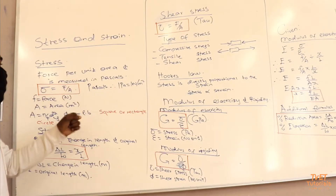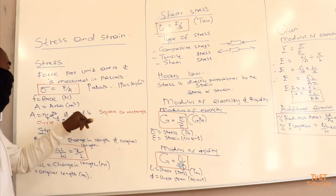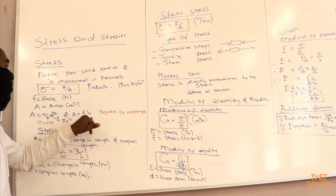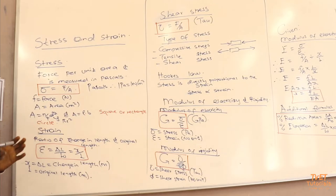If we have a square or rectangle, we have length and breadth. If the force is applied on a specific square or rectangle, the area is length multiplied by breadth.